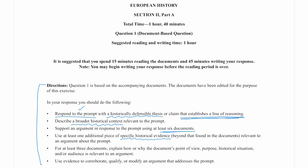For at least three documents, I need to explain how or why the document's point of view, purpose, historical situation, and/or audience is relevant to an argument — that's what we call sourcing, providing context for the documents. And then I need to use evidence to corroborate, qualify, or modify an argument that addresses the prompt, showing the complexity of my thinking to get the analysis and reasoning points. This is like a little checklist I can follow as I go throughout the essay.